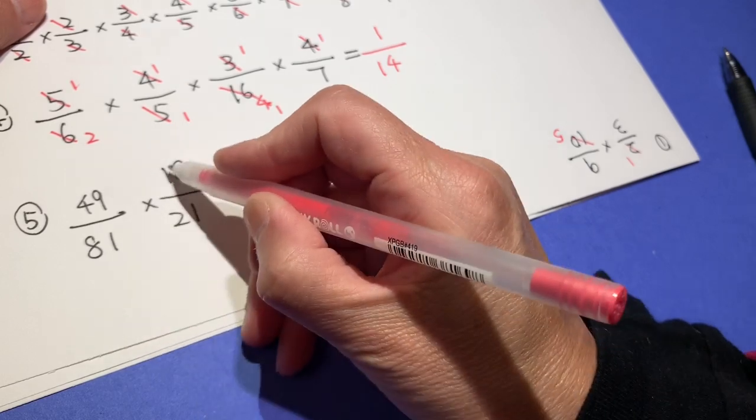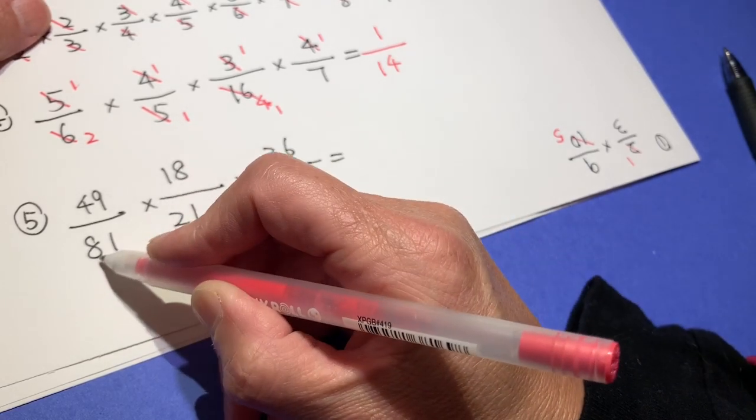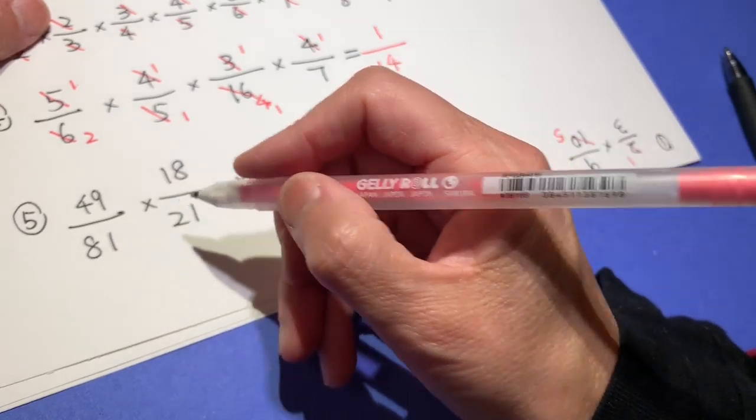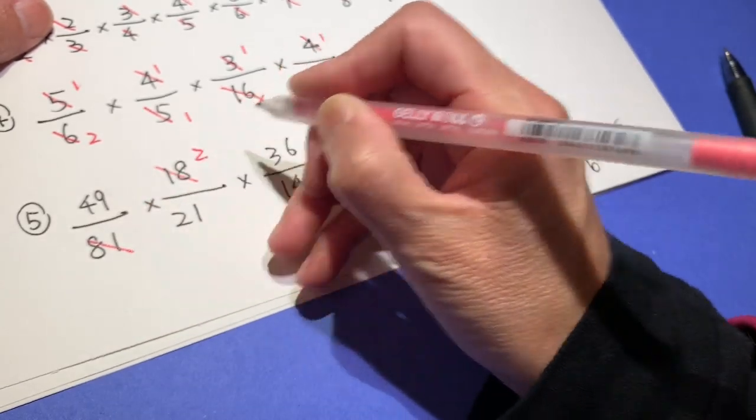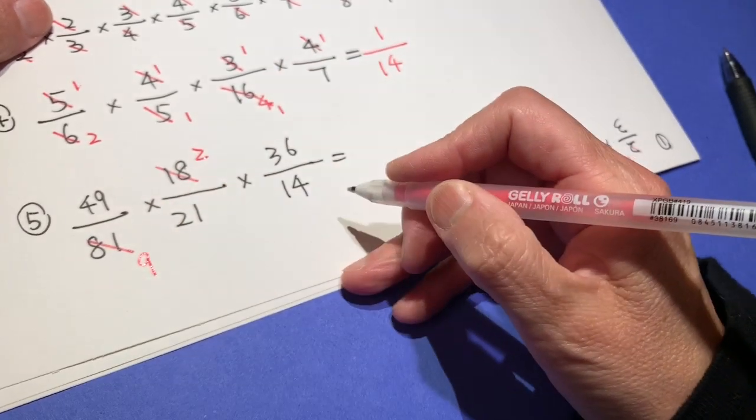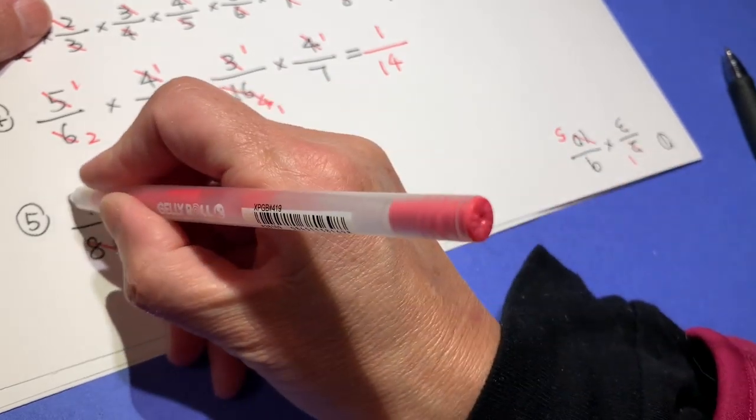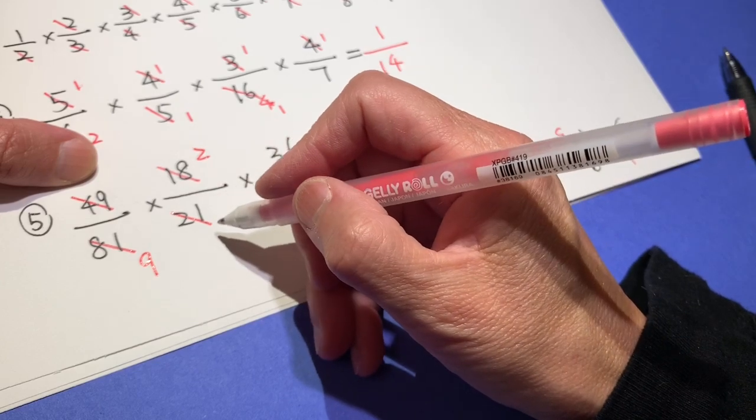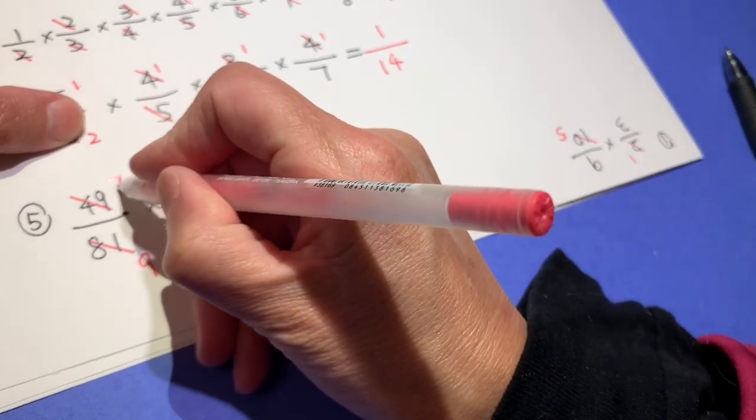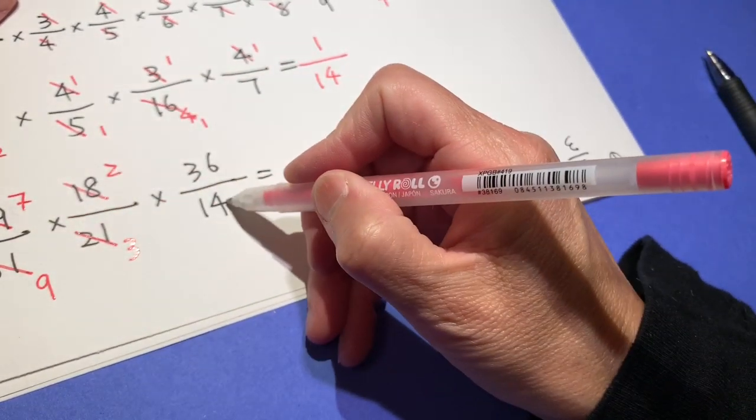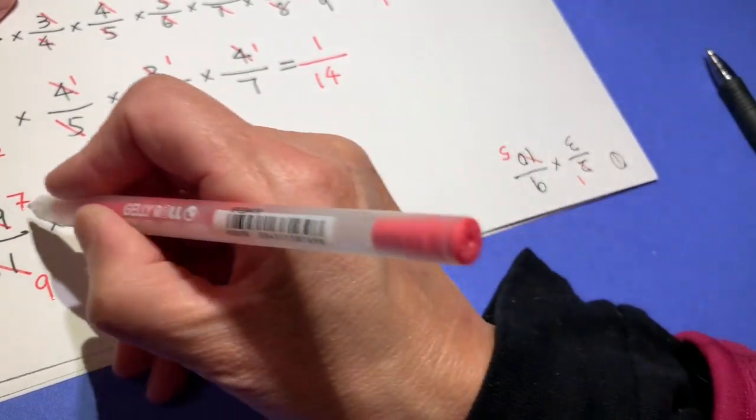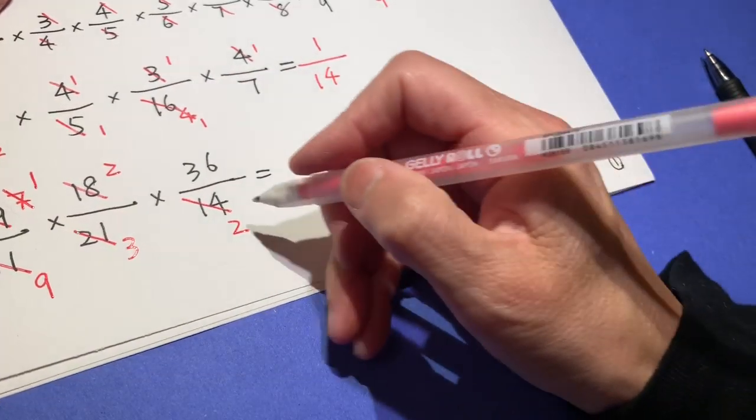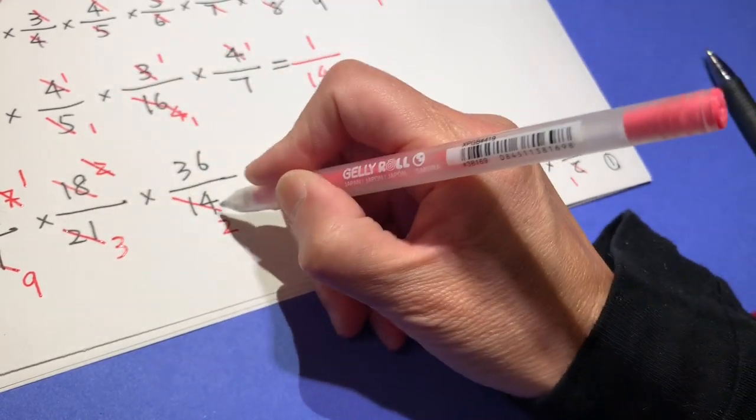81: 1 plus 8 is 9, 8 plus 1 is 9. So it can be divided by 9. 2, 9. And this 21 and 49, both can be divided by 7: 3, 7. And 7 and 14, both can be divided by 7: 1, 2. And 2 and 2, cross cancel.